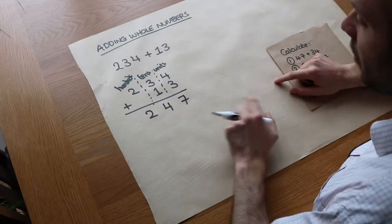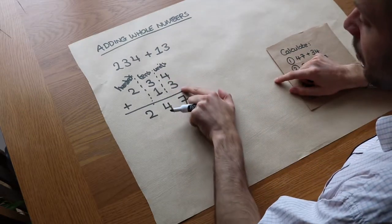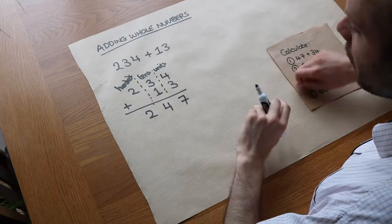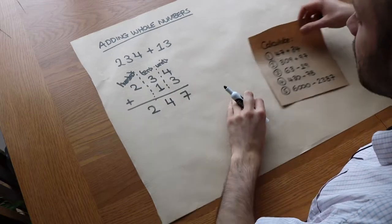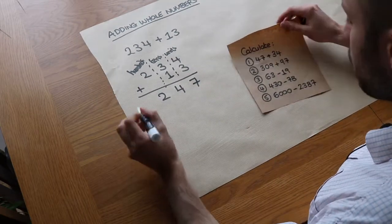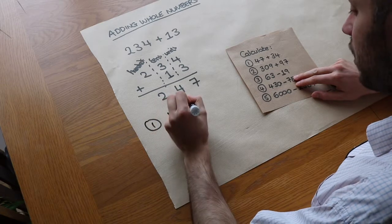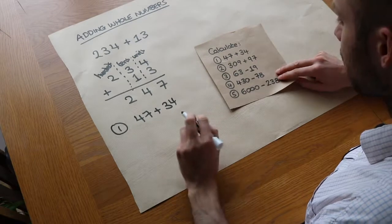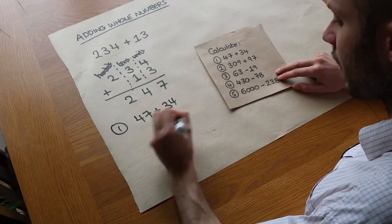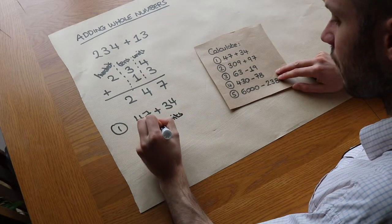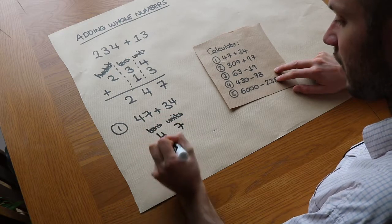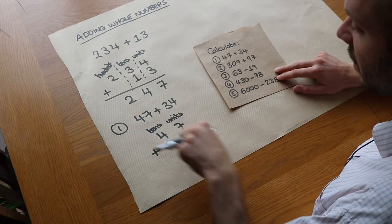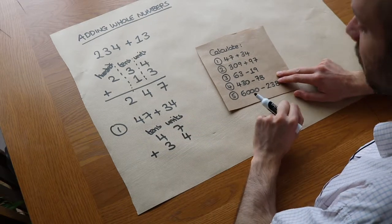Where it becomes slightly more complicated is when adding the digits gives a value greater than 10, because we're going to overflow into the next column to the left. Let's try with some of these. We want to calculate 47 plus 34. We first arrange into columns — the units column here and the tens column here. This is known as column addition, because we arrange the digits into columns based on their place value.